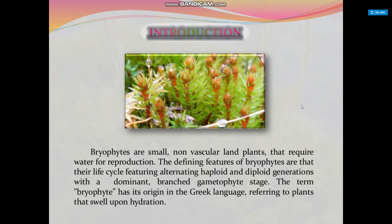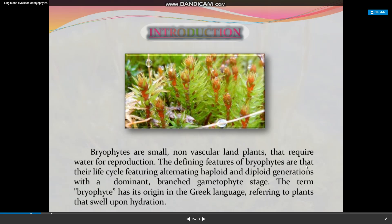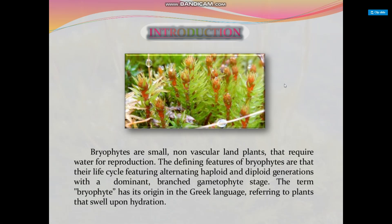Good morning students, this is Dr. Divya. Today's topic is origin and evolution of Bryophyta. Bryophyta are small non-vascular land plants that require water for reproduction. The defining feature of bryophytes is their life cycle featuring alternating haploid and diploid generations with a dominant branched gametophytic phase. The term Bryophyta has its origin in the Greek language, referring to plants that swell upon hydration.